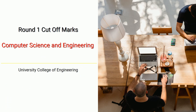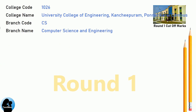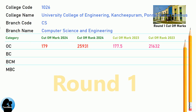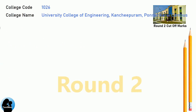DNA Round 1 Cut-Off for University College of Engineering, Kanchipuram in Computer Science and Engineering. DNA Round 2 Cut-Off for University College of Engineering, Kanchipuram in Computer Science and Engineering.